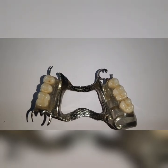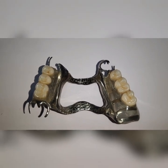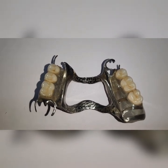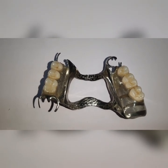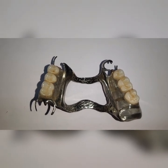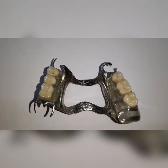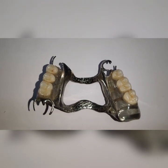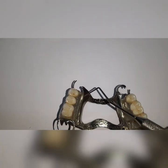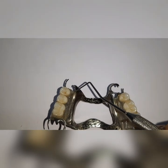Design considerations for minor connectors: foremost, they should be rigid so that they can withstand functional stresses. They should be positioned in the embrasure area — that is, between two teeth in the embrasure space. They should be thickest lingually and should taper as you come towards the contact area. If you see this minor connector here, it is thicker lingually and as you come up towards the contact area it tapers.